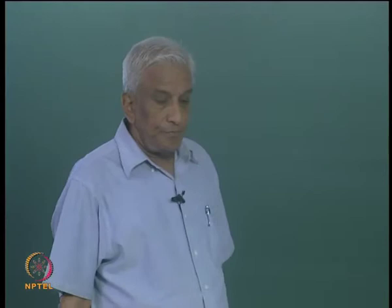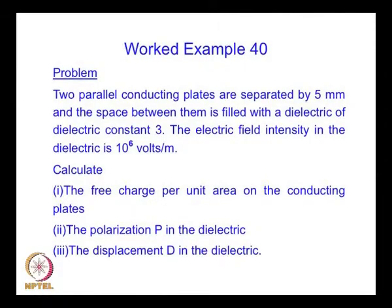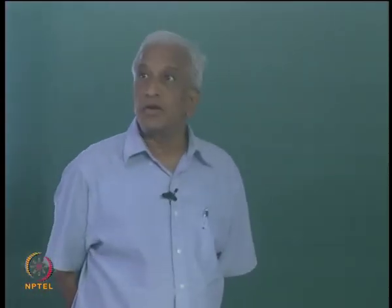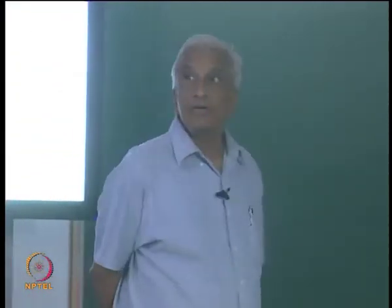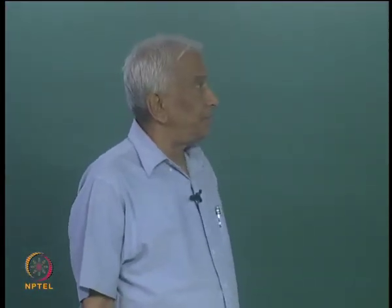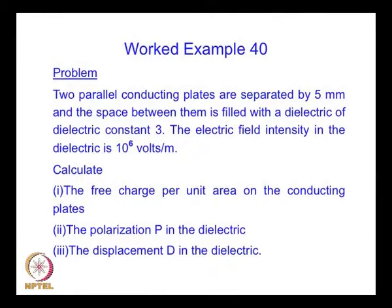The first problem is a general one in which we are told that there are two parallel conducting plates separated by 5 millimeters, and the space between them is filled with a dielectric material whose dielectric constant is 3. The electric field intensity in the dielectric is given as 10 to the power 6 volts per meter. We are asked to calculate: first, the free charge per unit area on the conducting plates; second, the polarization P in the dielectric; third, the displacement vector D in the dielectric.